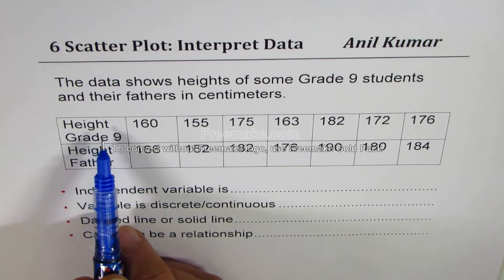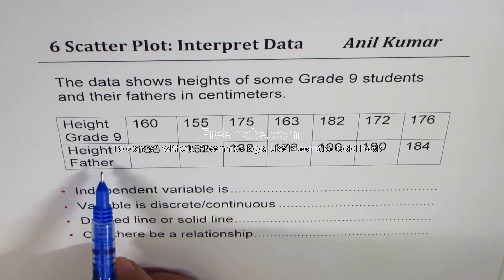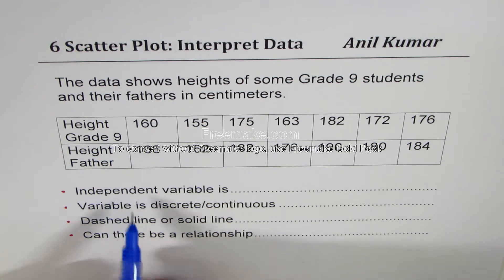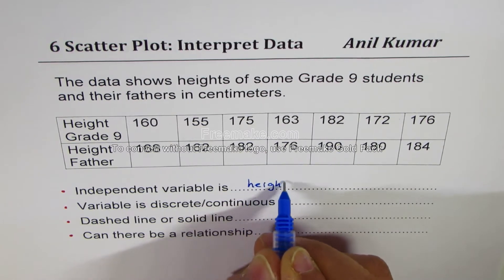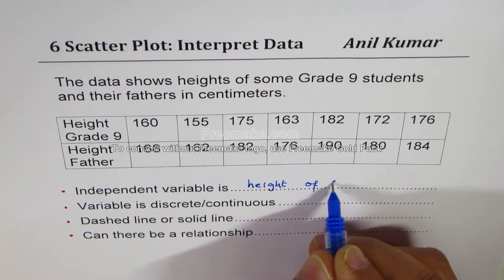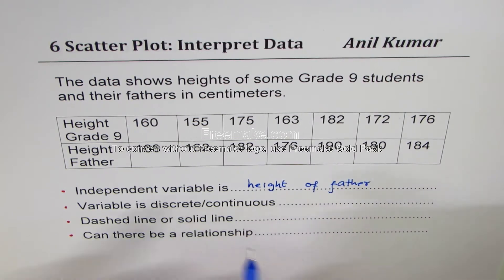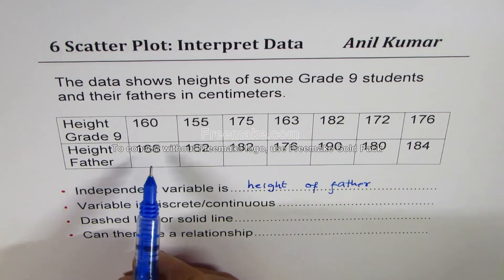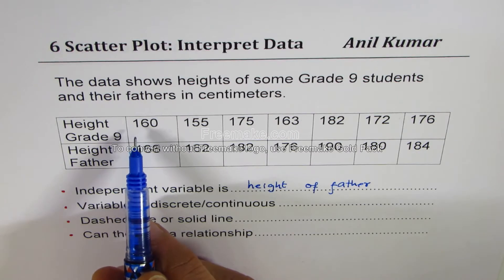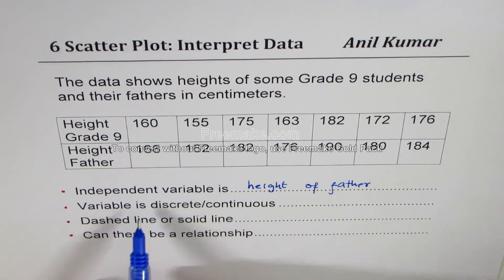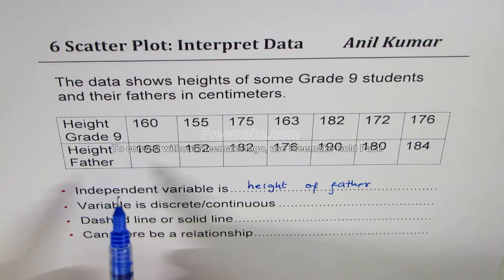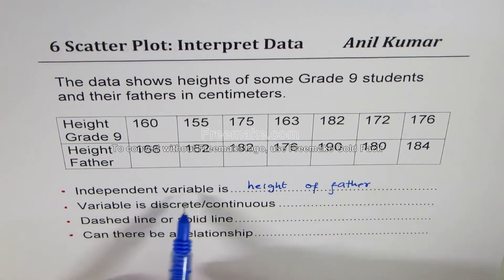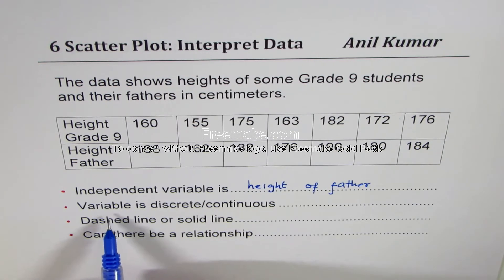So the answers: the independent variable is what? Here we are measuring the height of students knowing the height of the father, so the independent variable is height of father. We are trying to correlate the height of the student with the father, which is why height of father is the independent variable.